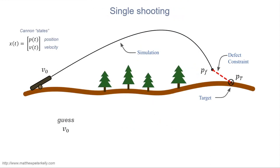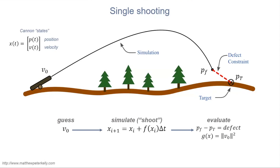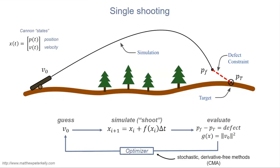One approach to solving an optimal control problem is single shooting. In single shooting, you first make a guess at the design variables — for the cannon problem, this is the initial velocity v naught. Then, to generate states that satisfy the dynamics, you simulate your system using a forward integration scheme, here a forward Euler integration, where the states are the cannon position and velocity. At the end of the simulation, you evaluate the results: did I hit the target, and what was the cost? These results are passed to an optimizer — typically a stochastic or derivative-free solver such as covariance matrix adaptation (CMA). One thing to note: the simulation step is disconnected from the optimizer; all the optimizer sees are its guesses and the outcome of the simulation — the simulation itself is a black box.